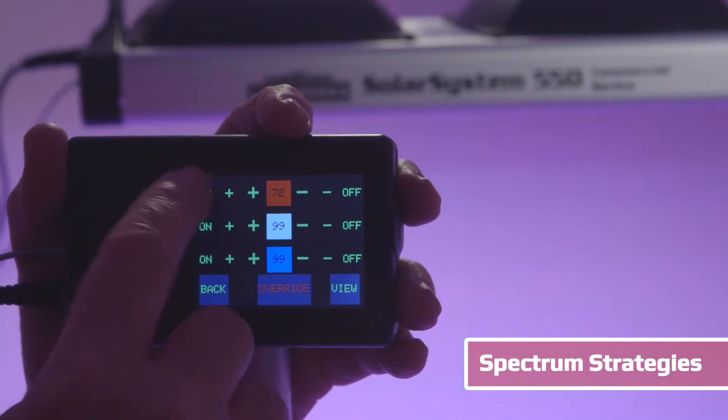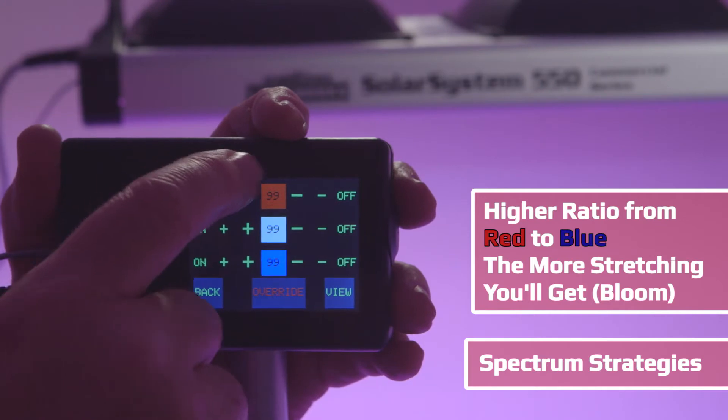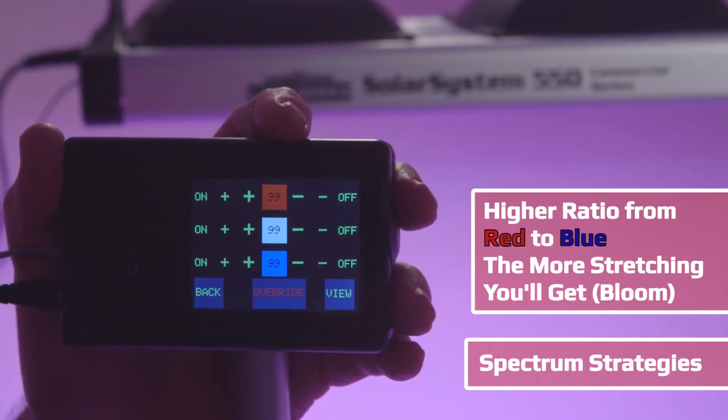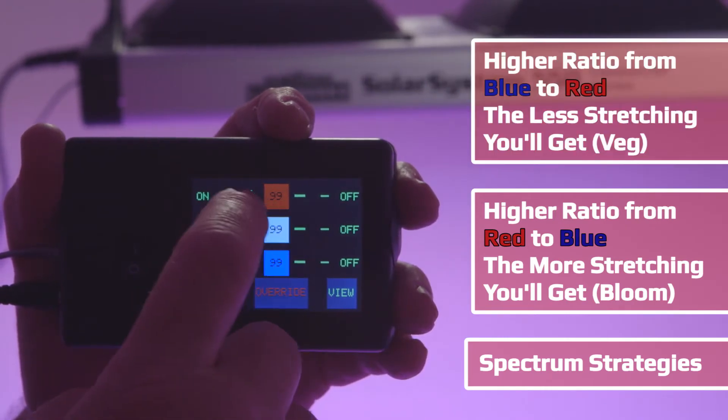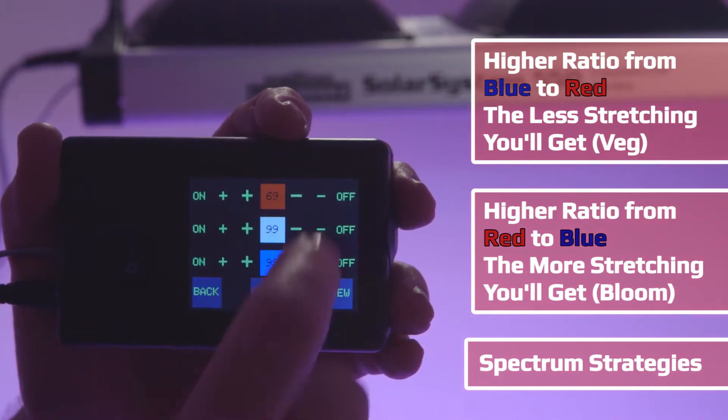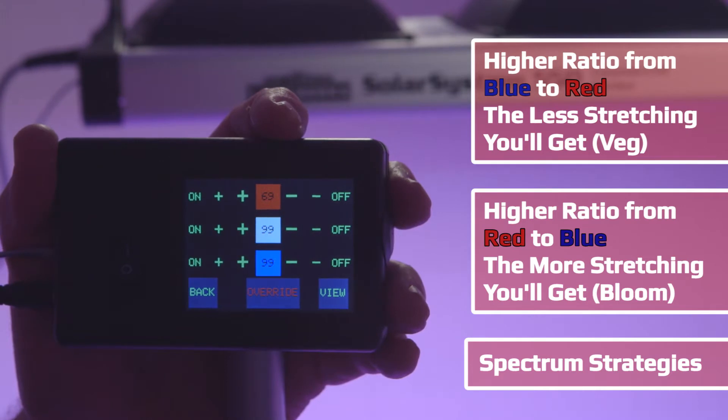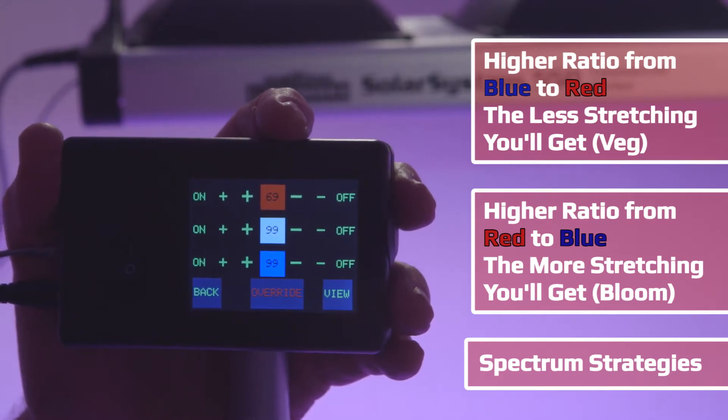The higher the ratio of red to blue, the more stretching you get. Red induces stretching of plants. If we back off the red, you get less stretching. The higher the ratio of blue, the less stretching you get and the more bushy vegetative growth with shorter spaces between the nodes.